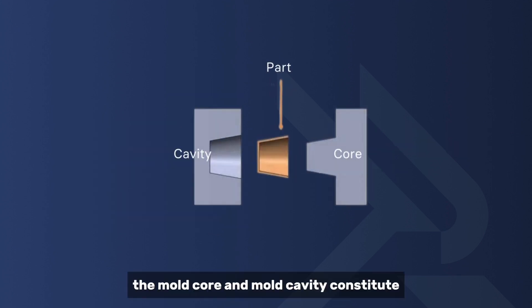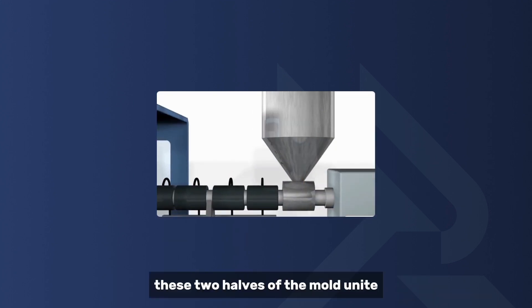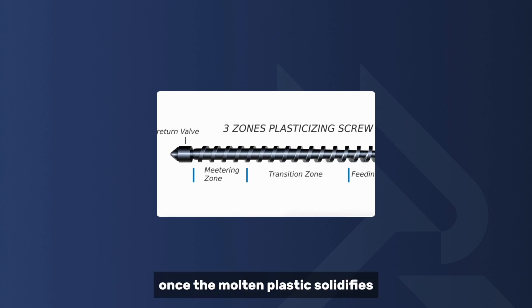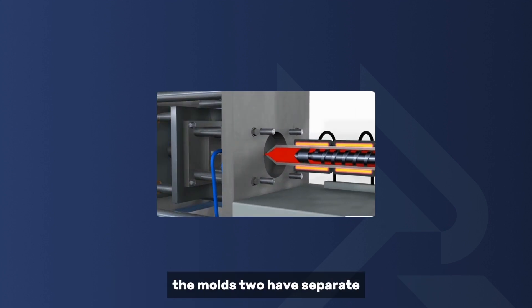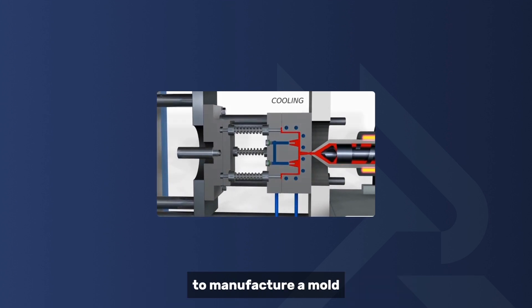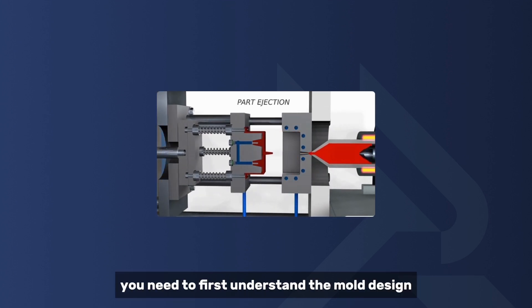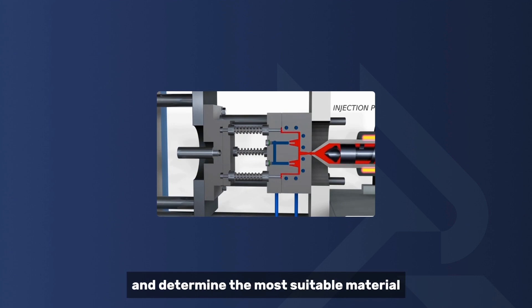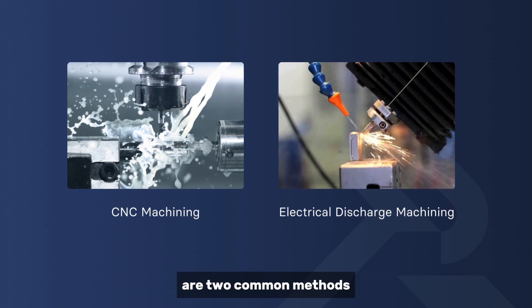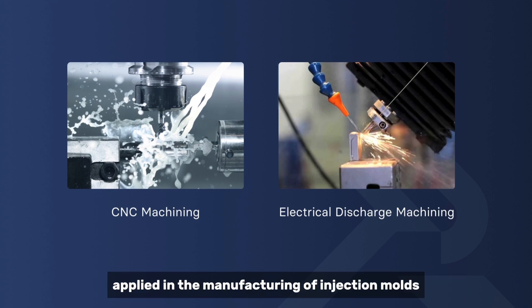The mold core and mold cavity constitute two pivotal components within injection molds. These two halves of the mold unite, allowing molten plastic to be injected into the tool. Once the molten plastic solidifies, the mold's two halves separate, facilitating the ejection of the finalized part. To manufacture a mold, you need to first understand the mold design and determine the most suitable material. Typically, CNC machining and electrical discharge machining are two common methods applied in the manufacturing of injection molds.